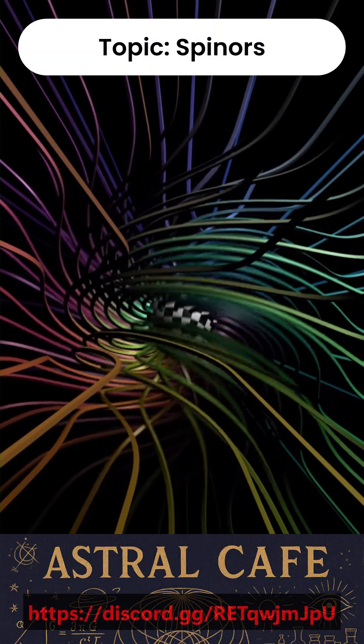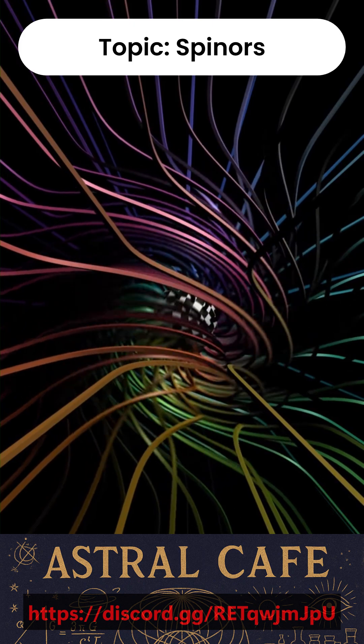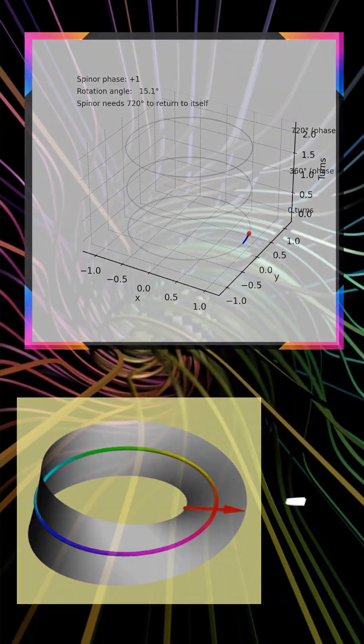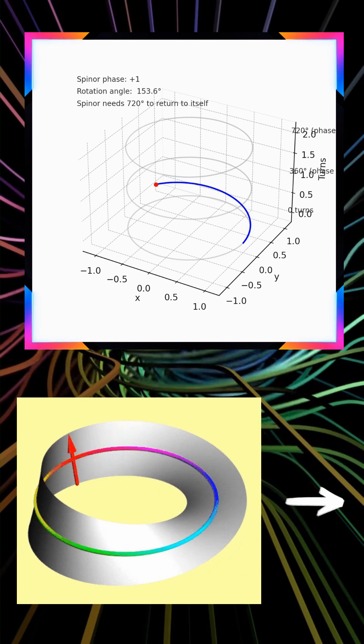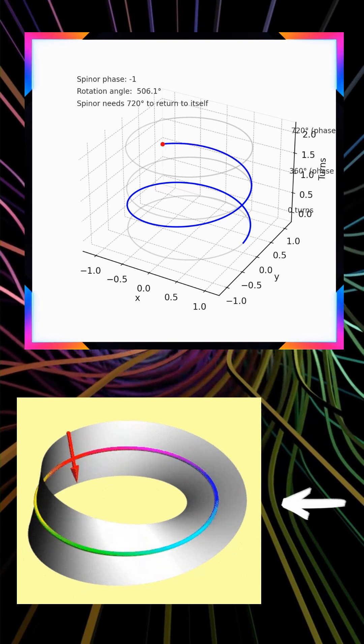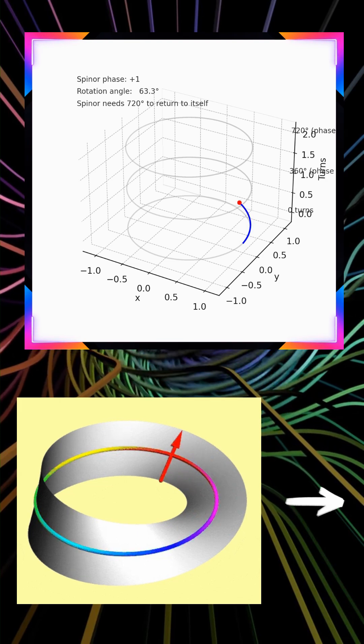Spinors are special mathematical objects used in physics to describe particles like electrons and neutrinos. Unlike ordinary vectors, spinors have a strange property. If you rotate them by a full turn, 360 degrees, they don't return to the same state. They actually flip sign, and only after a 720 degree rotation do they come back to themselves.